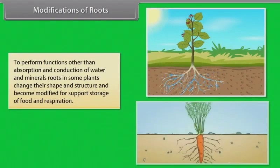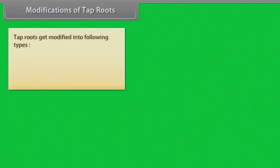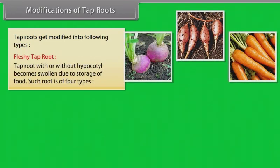Modifications of roots: To perform functions other than absorption and conduction of water and minerals, roots in some plants change their shape and structure and become modified for support, storage of food, and respiration. Tap roots get modified into the following types. Fleshy tap root — the tap root with or without hypocotyl becomes swollen due to storage of food, and is of four types.